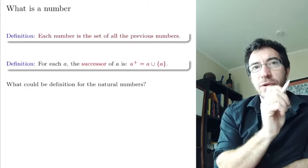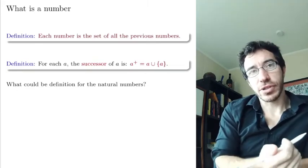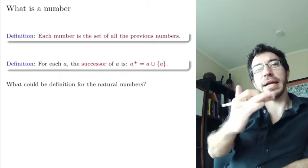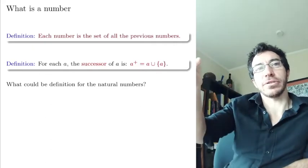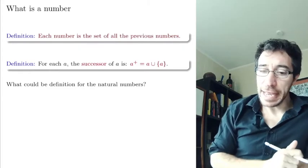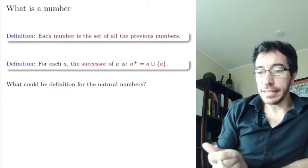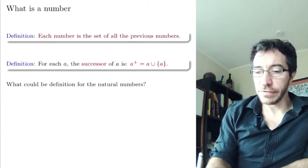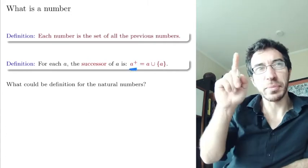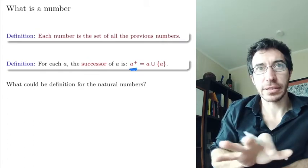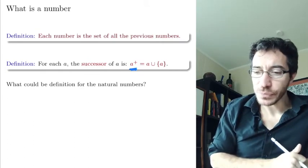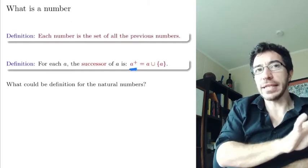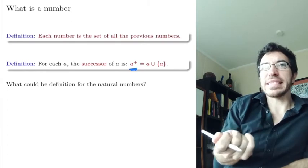Before that, let me take one step back — this is going to be useful for the definition. It's how you define the successor: given a number n, how you define its successor, meaning n plus 1. We can define the successor of a — we're going to use this quite a bit in the next couple of videos. So a⁺ is just a very simple definition: it's the set a union {a itself}.